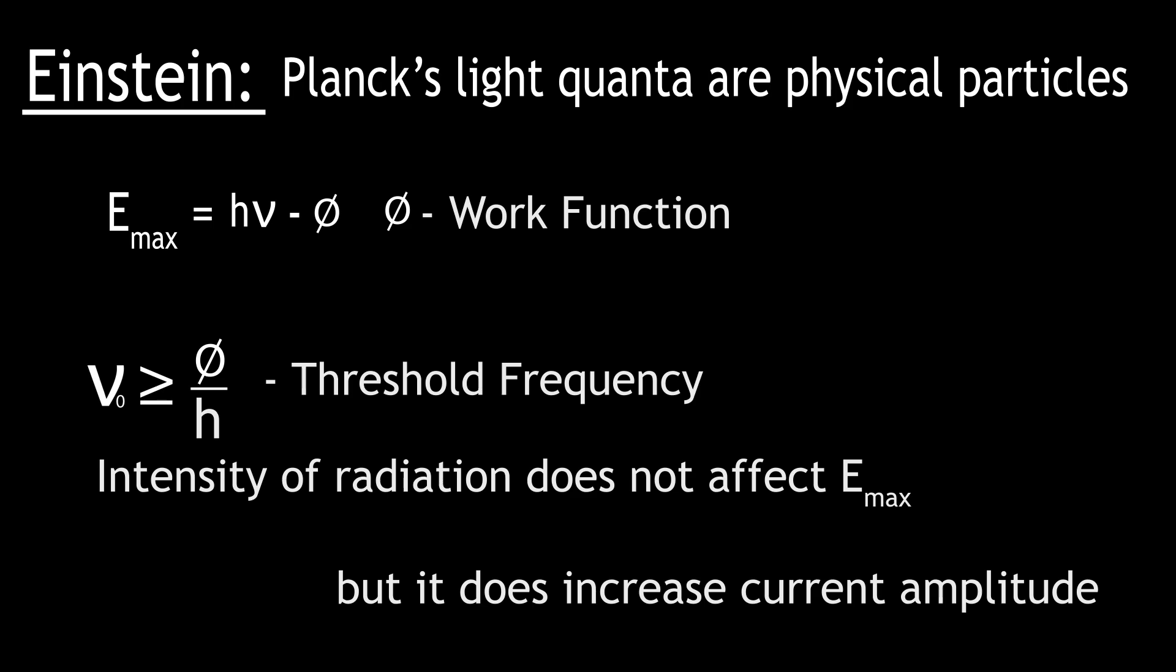Now, any good theory should produce a plethora of experimentally verifiable results, even if the theory turns out to be wrong. If it produces well-defined predictions that can be tested, by scientific standards, it's a good theory. For a textbook example of a theory that's good but not correct, see the steady state theory in cosmology.